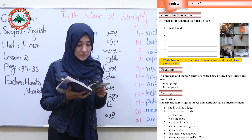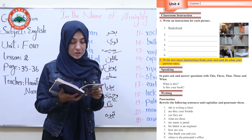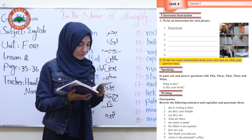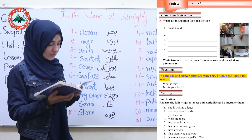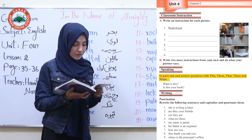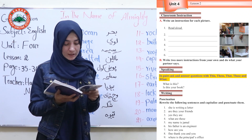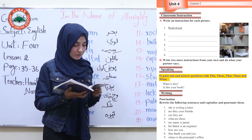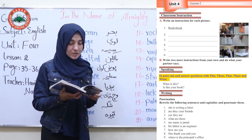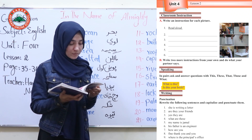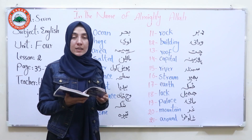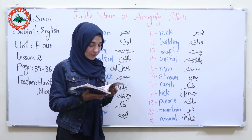Write 2 more instructions from your own and do what your partner says. Now speaking in pairs: ask and answer questions using this, these, that, those and what — juraayi pa shakil taso sawal pukhtu nao kee. Use demonstrative pronouns — demonstrative pronouns taso waii leo. For example: What's this? Is it your book? That's your brother. This is your book.